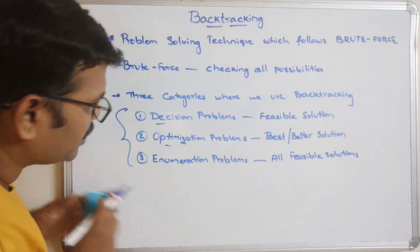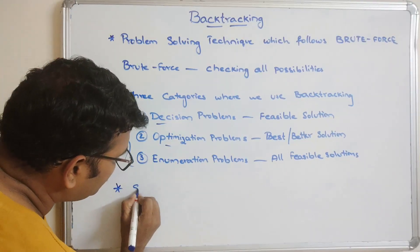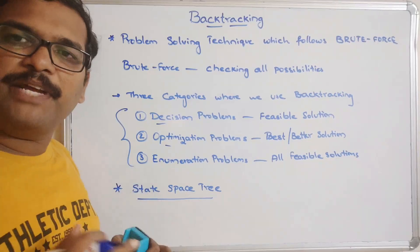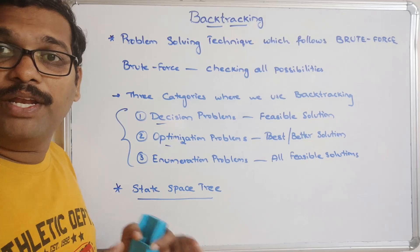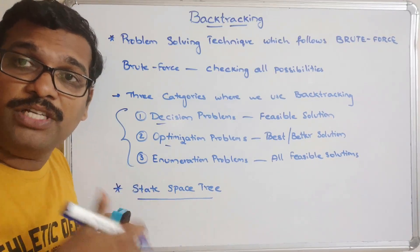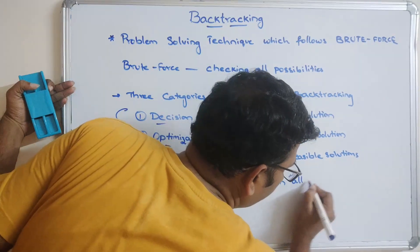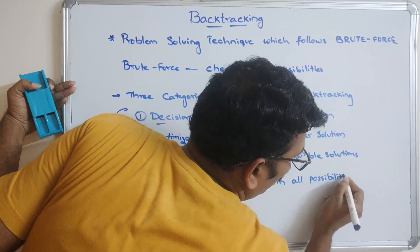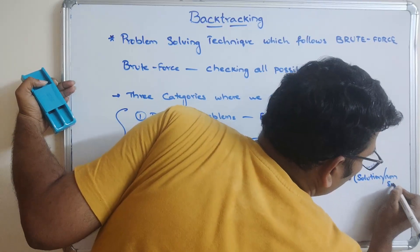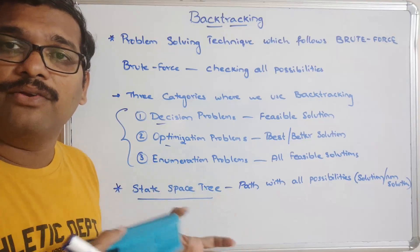In order to find feasible solutions, we construct a state space tree. This is a tree representing all possibilities — a path with all possibilities, either leading to a solution or a non-solution. Everything is constructed in this state space tree, and with its help we find the solutions.